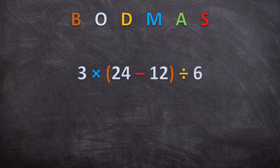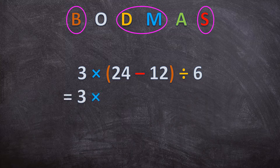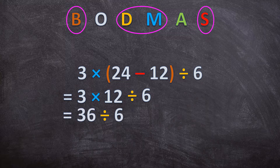Now it's getting more advanced. Here we have brackets, division, multiplication, and subtraction. What's the first thing we do? Brackets first. So we write down the 3 times — not touching that yet — and we do the brackets: 24 minus 12 is 12. Then we write down divide by 6. Now we only have multiplication and division, going left to right: 3 times 12 is 36, and 36 divided by 6 is 6.